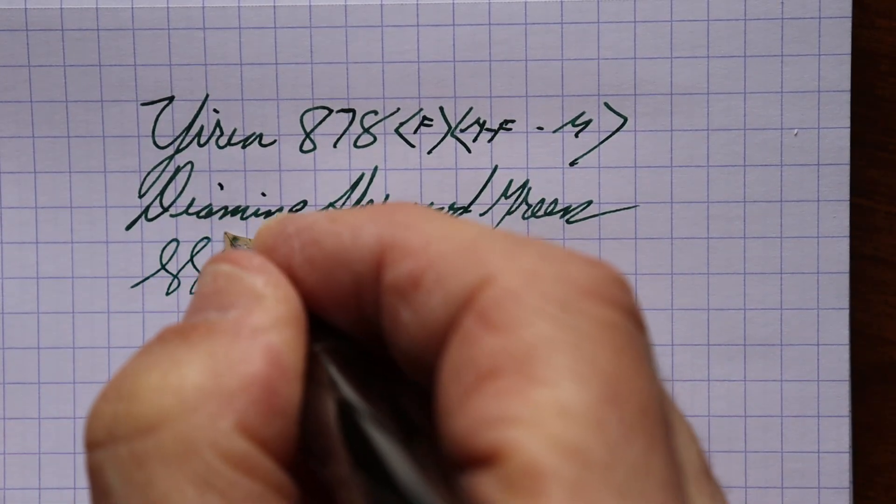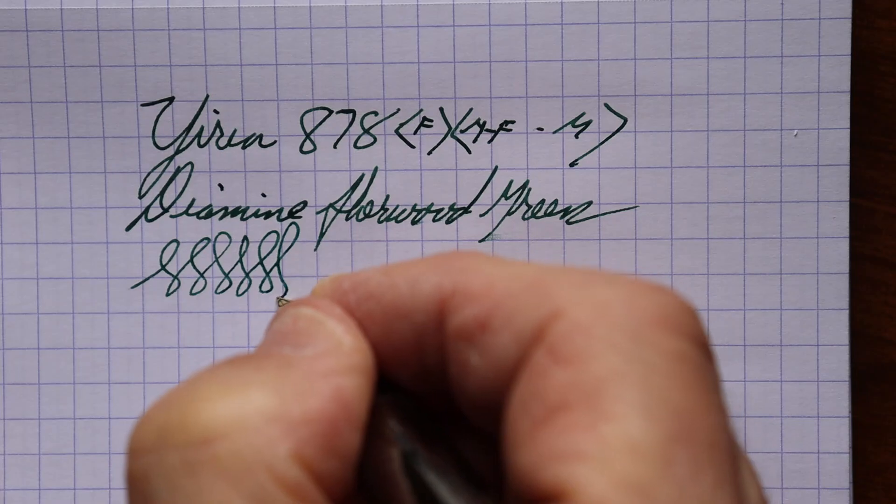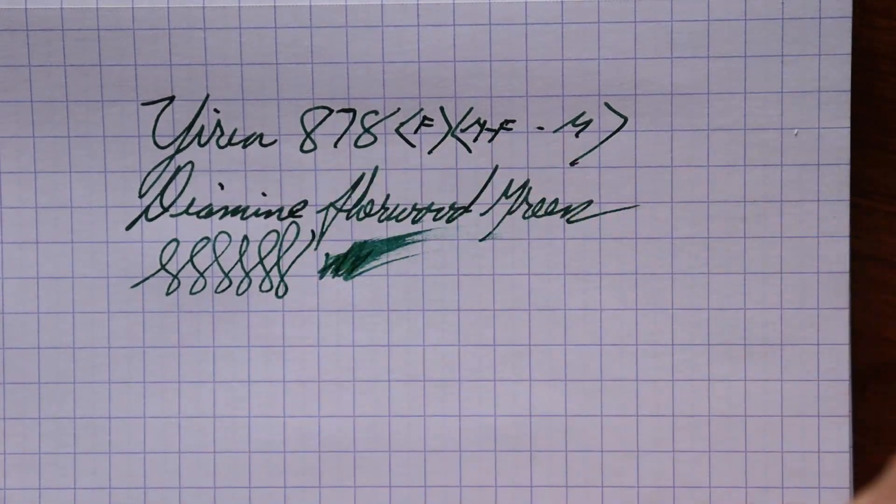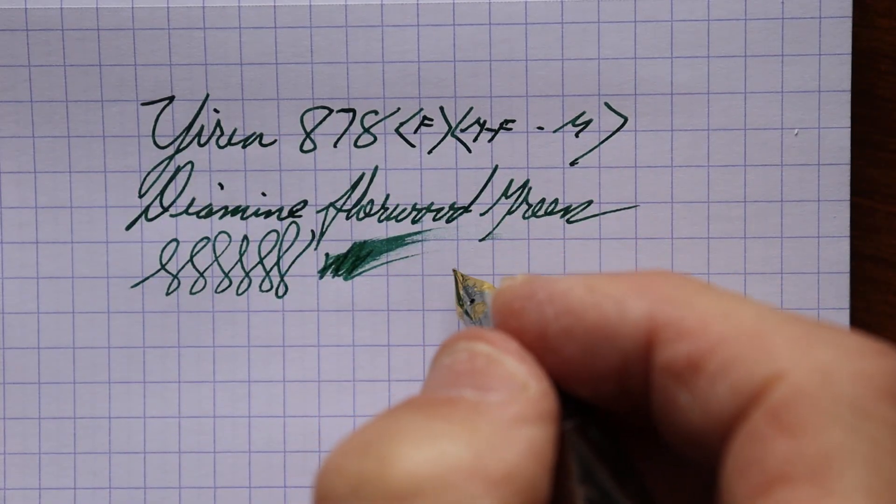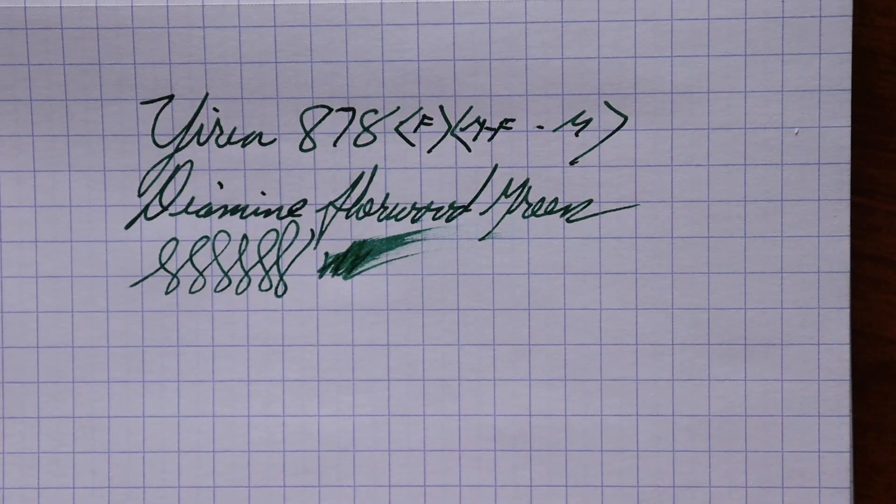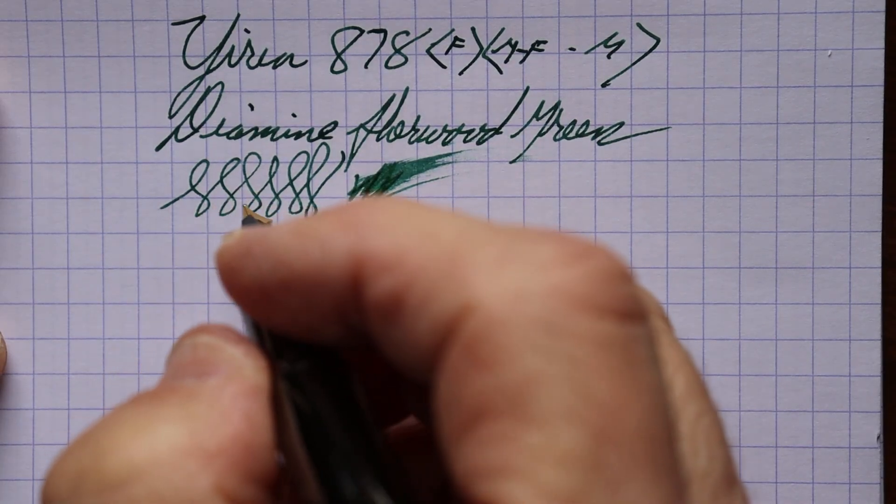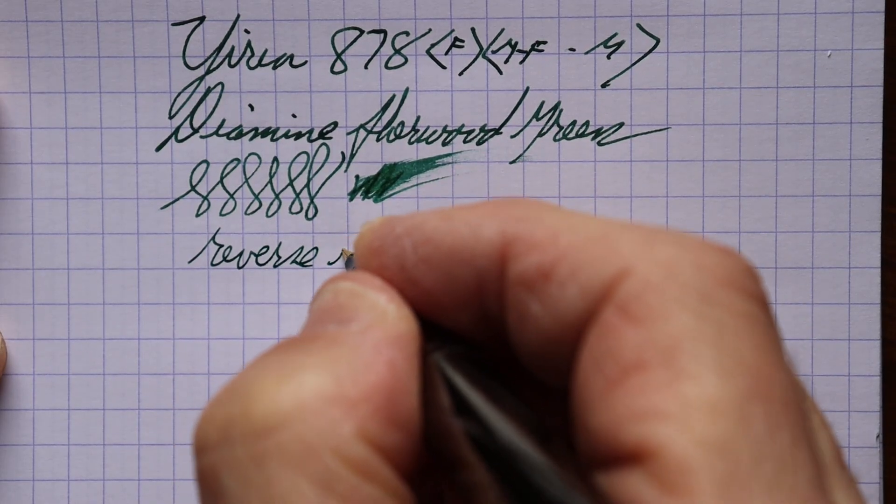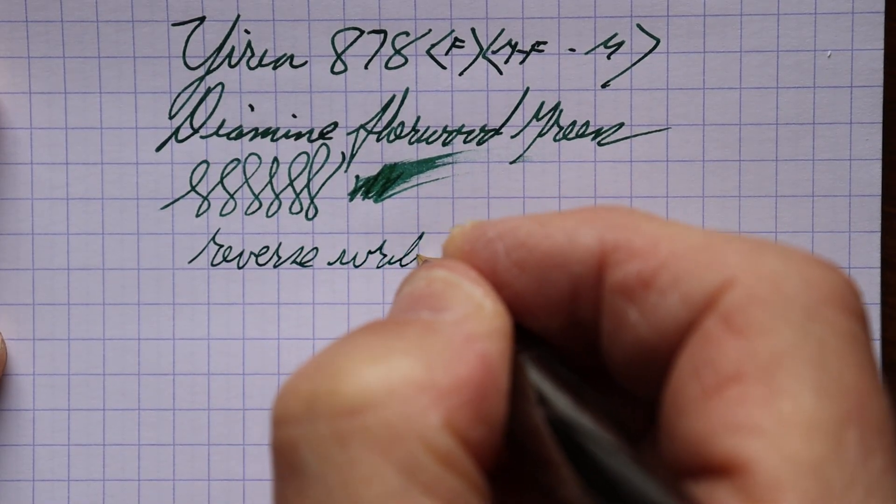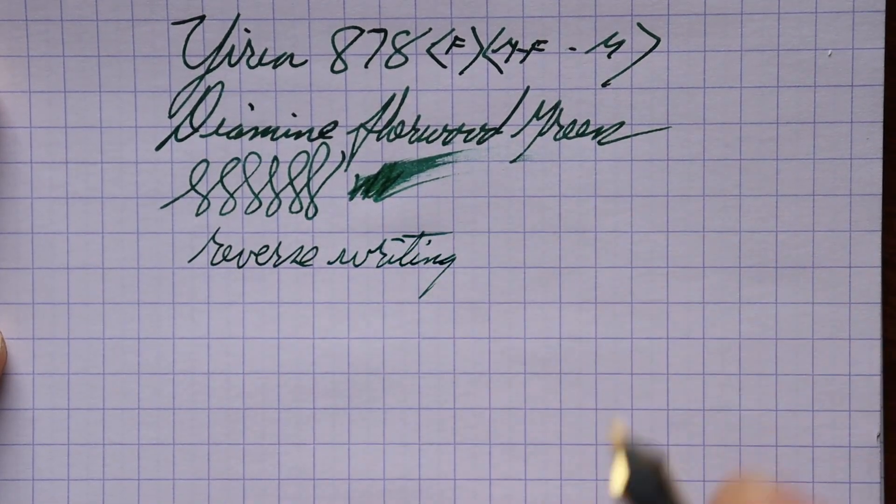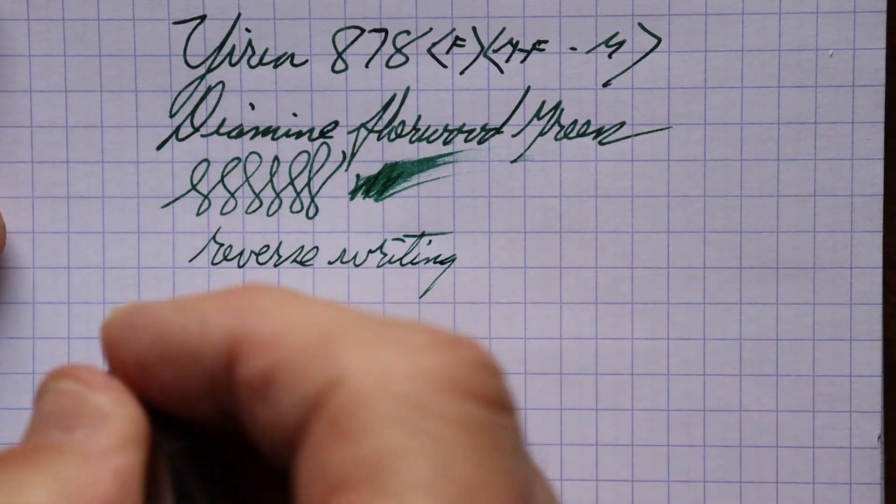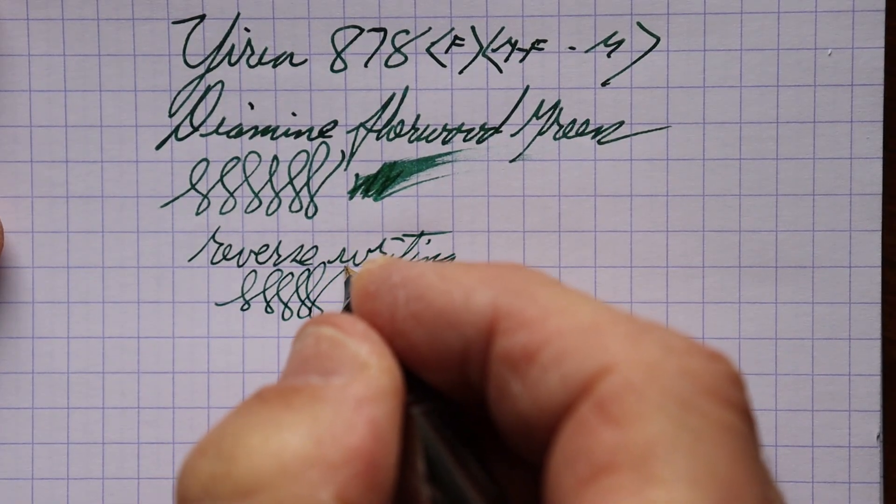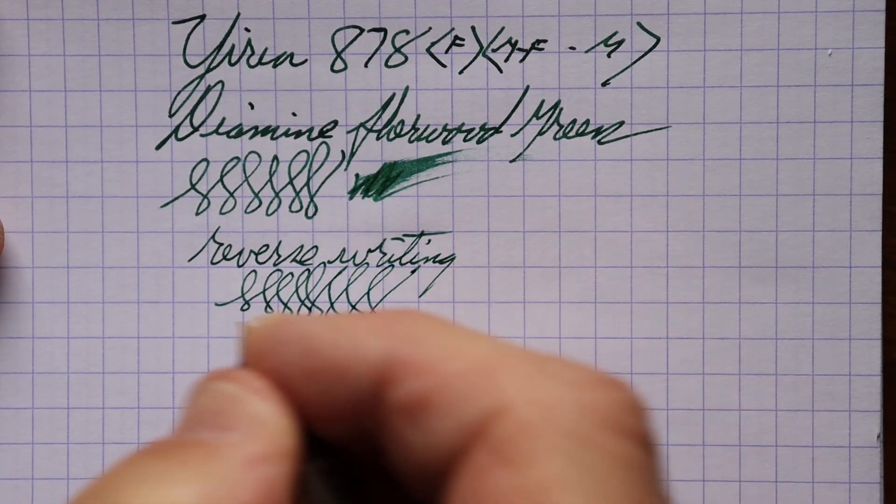All right, no skips or hard starts. Moderate wetness, decent wet, okay. Let's see, how about reverse writing? I am using more, obviously a little more feedback, but it's not too bad and it keeps up there as well, just keeps on going.